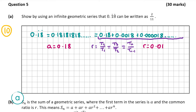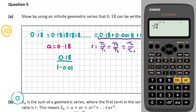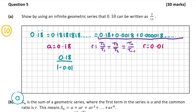Using our formula a over 1 minus r, we get 0.18 over 1 minus 0.01. Putting that into the calculator gives us 2 over 11. So we've shown that 0.181818... and so on can be written as 2 over 11, and that's our answer for question 5 part a.